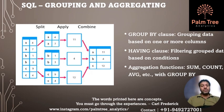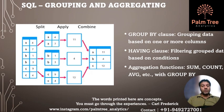The HAVING clause allows us to filter group data based on specified conditions. It operates similarly to the WHERE clause but on group data after aggregation.